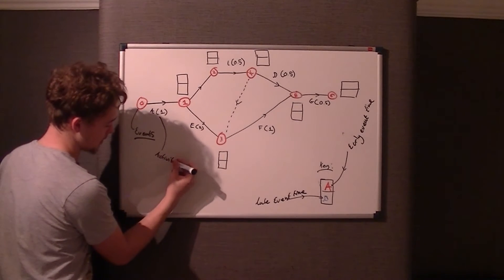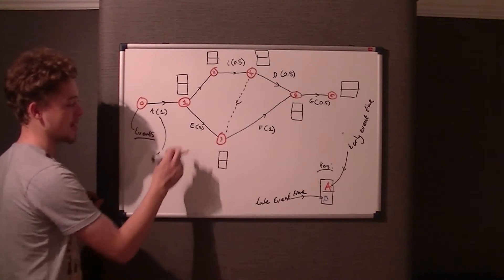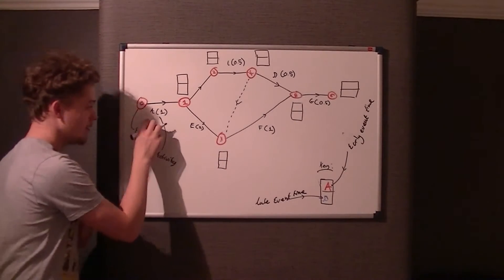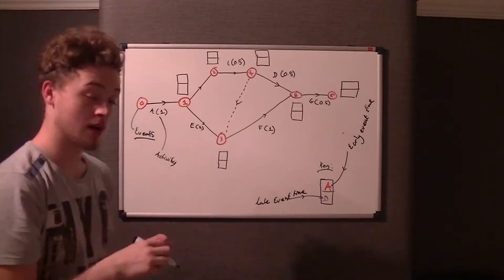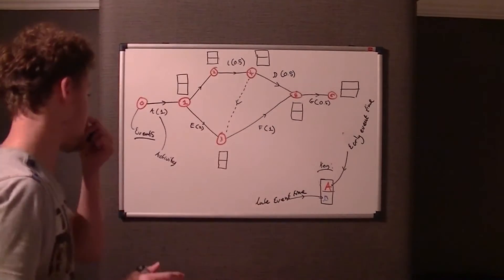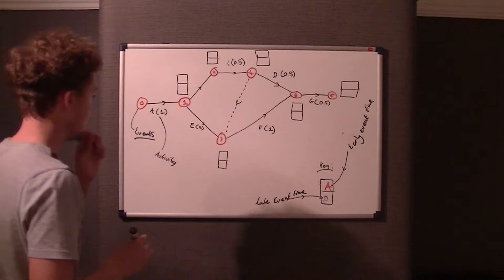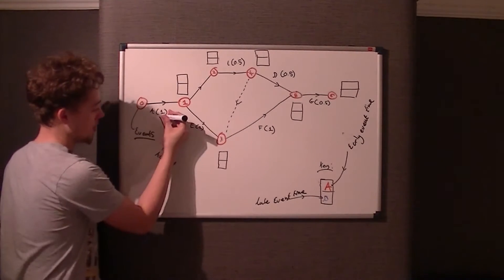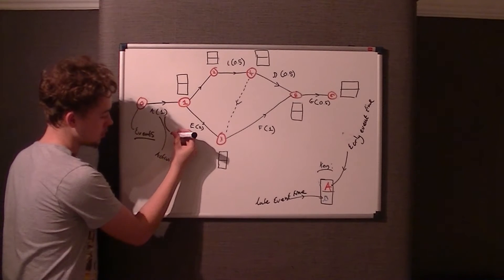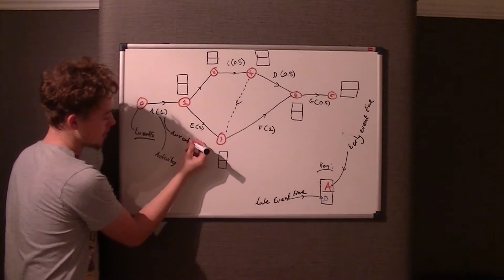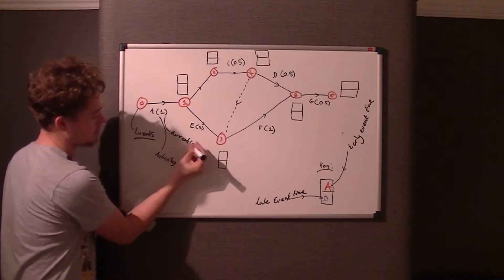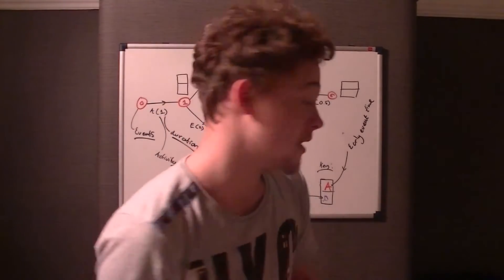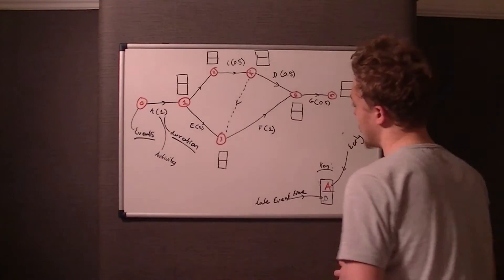The letter on each arc is the activity name — this is activity A, activity E, etc. In event one, activity A takes place. The number in brackets is called the duration. It might relate to time, distance — it doesn't really matter.